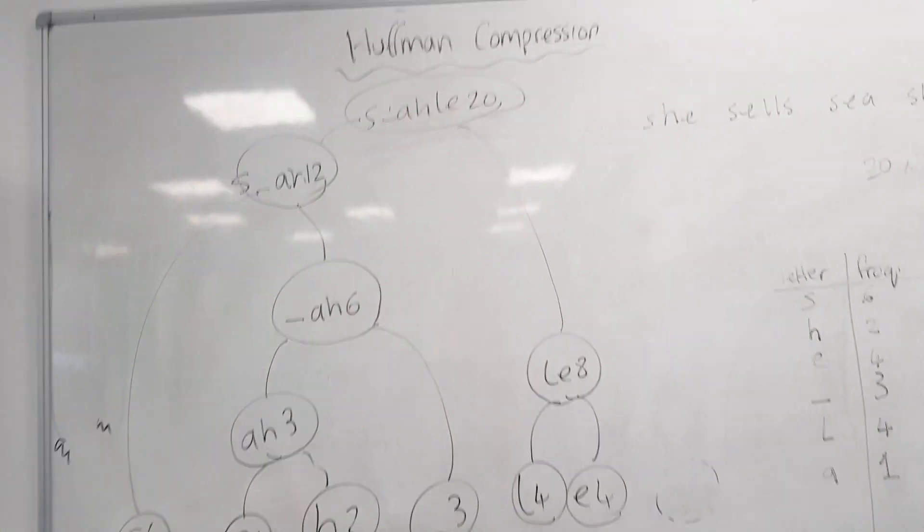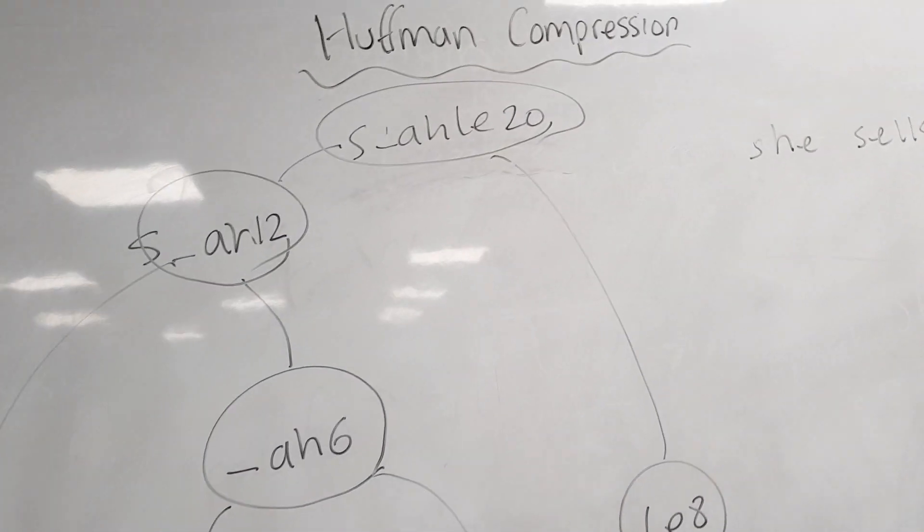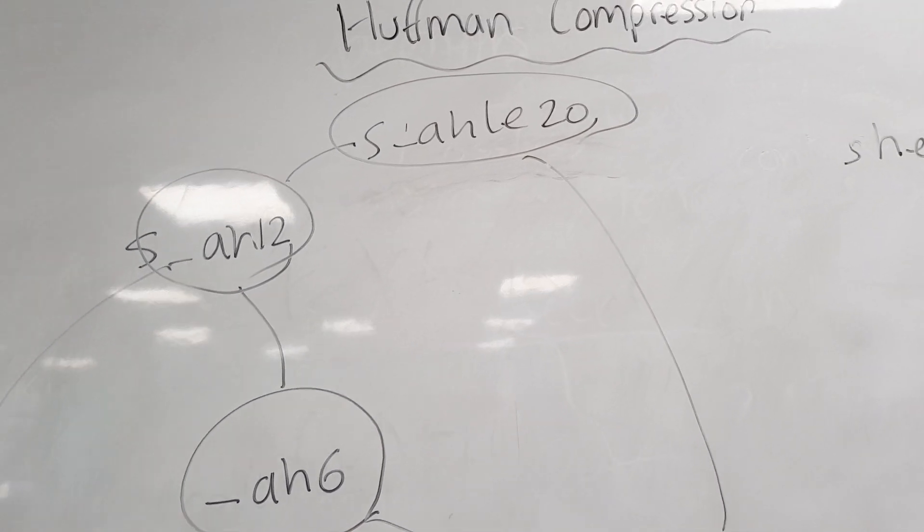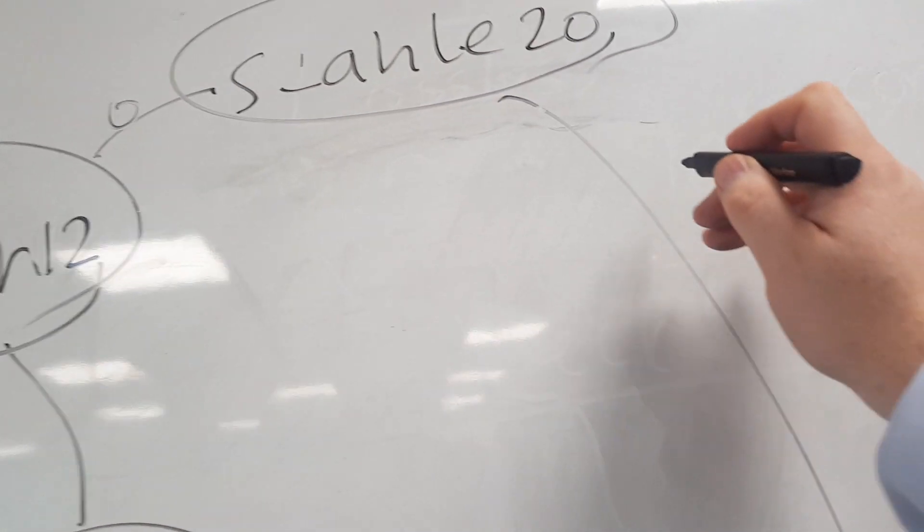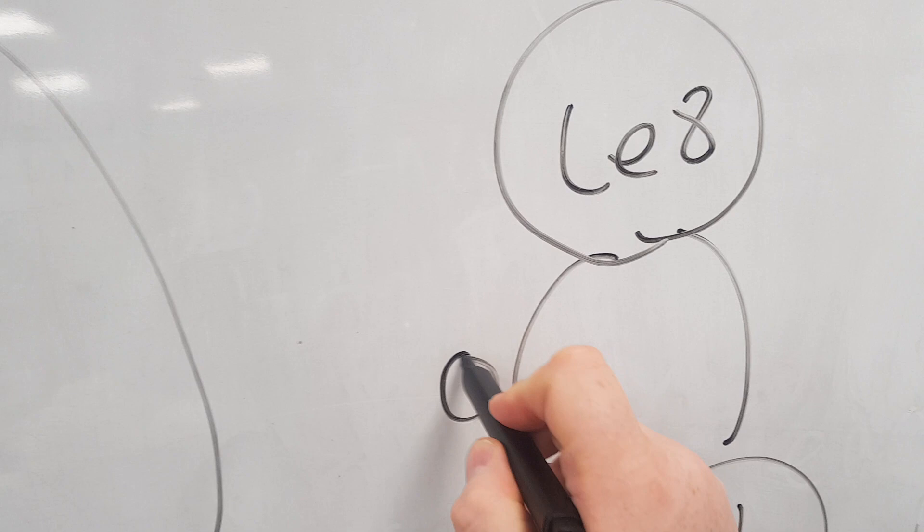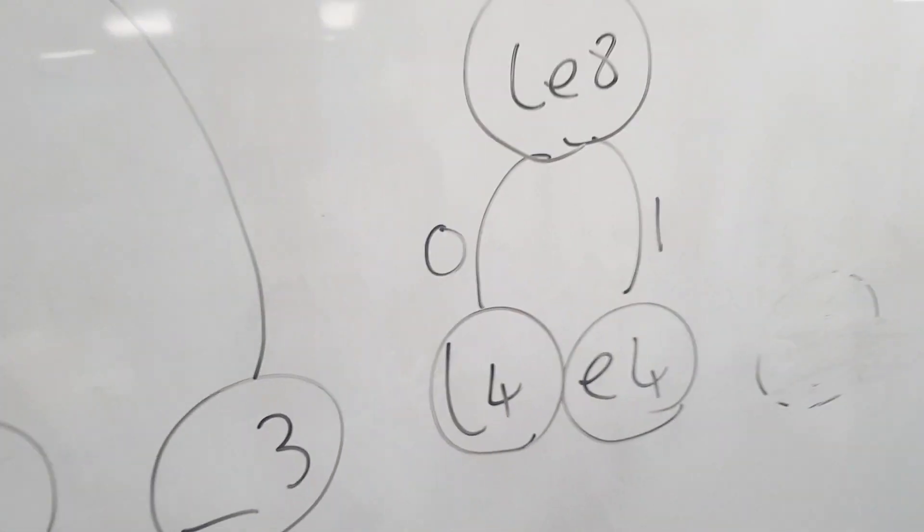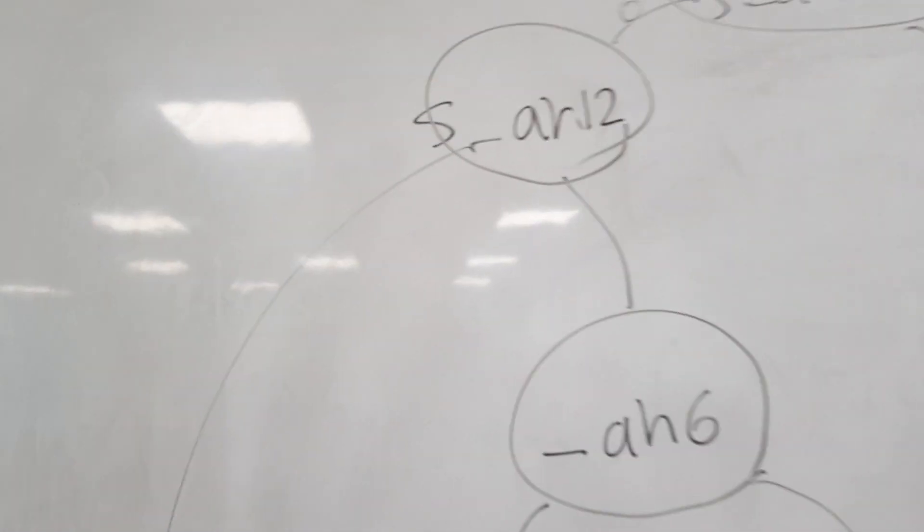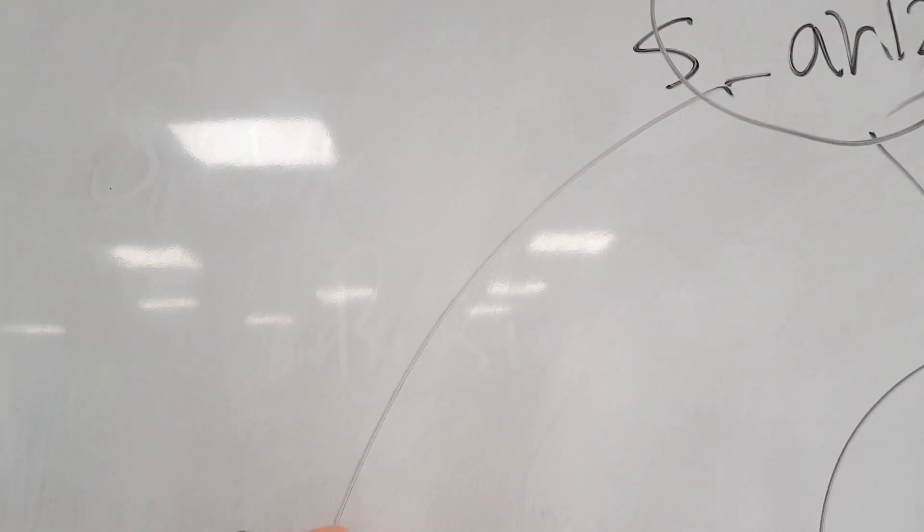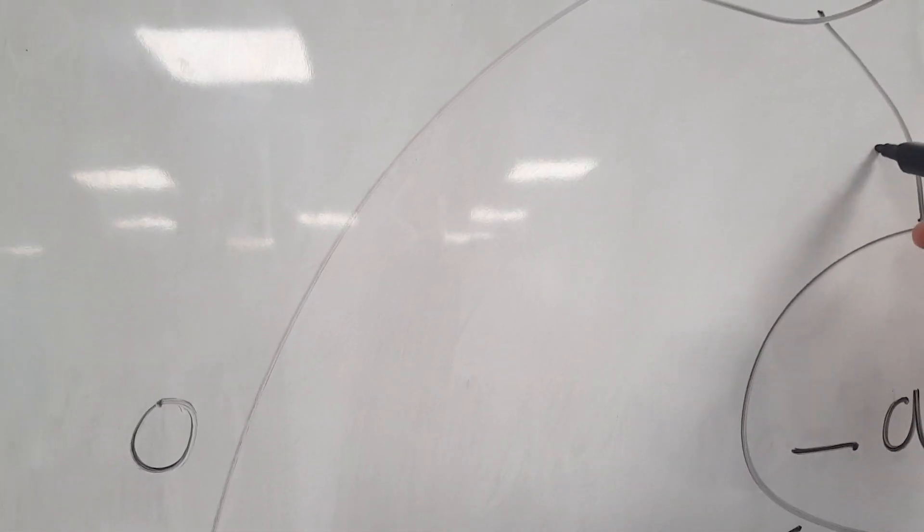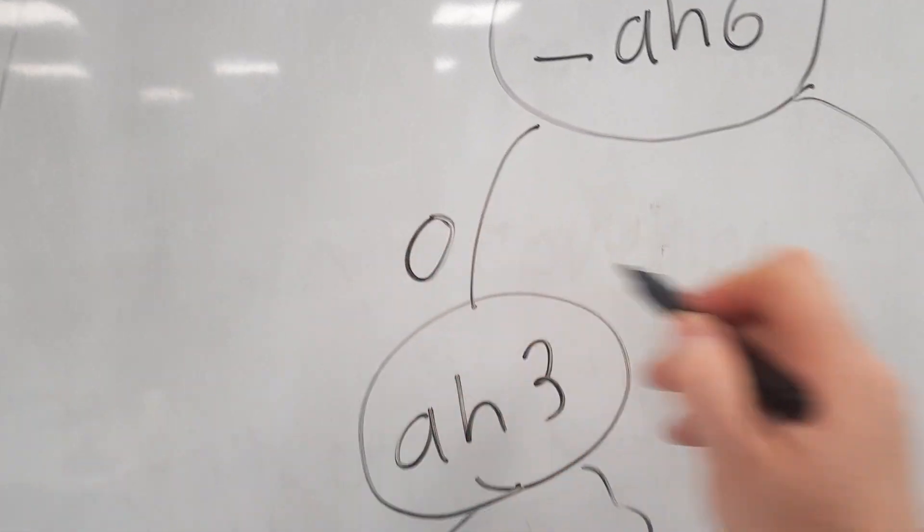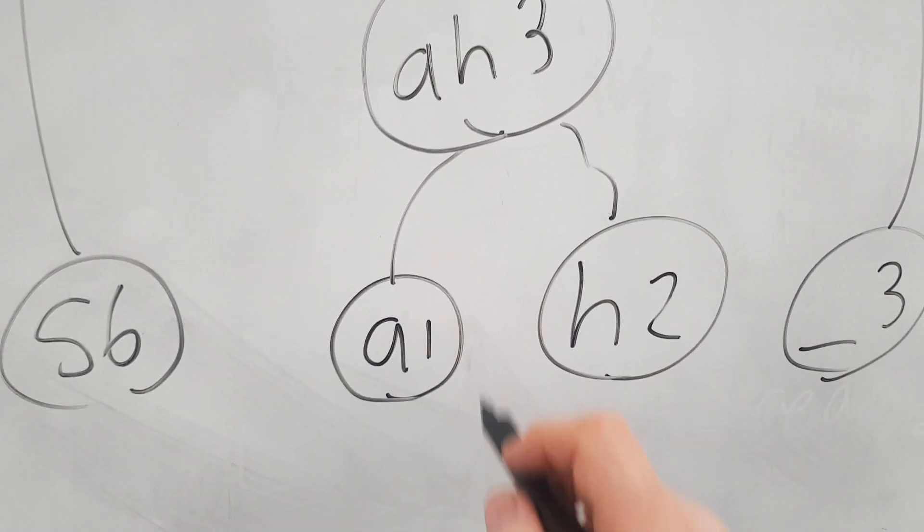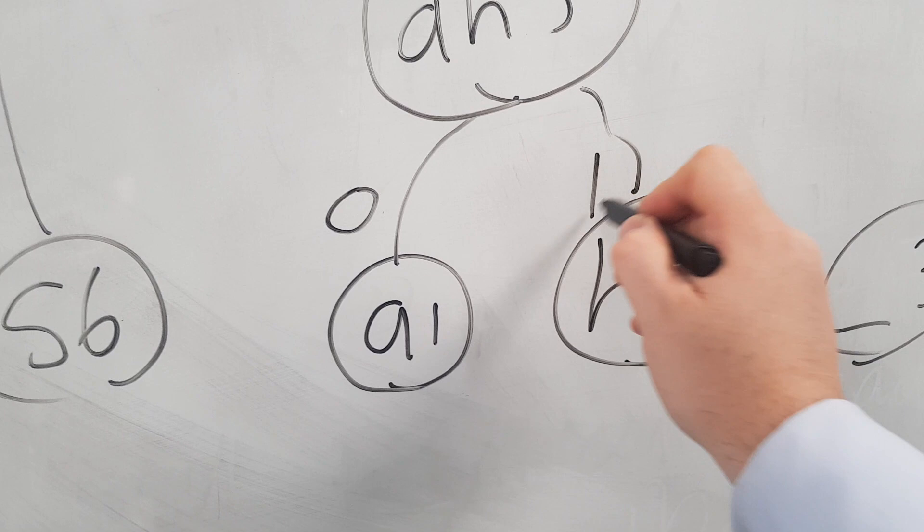And now what we do is we allocate some binary pathways. So this becomes zero and this becomes one, and then when we get to here we get this one zero and this one's one, and then we get zero and one here, and we get zero and one here, and then we get zero and one here.